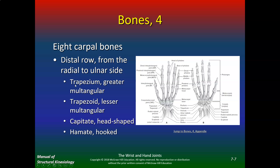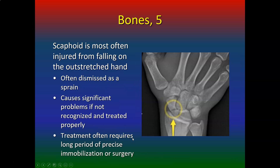The distal row is Trapezium, Trapezoid, Capitate, and Hamate — 'That They Can't Handle.' So the full mnemonic is 'Some Lovers Try Positions That They Can't Handle.' Knowing the beginning of each word helps you figure out the rest. The scaphoid is the most commonly injured from falling on the outstretched hand.